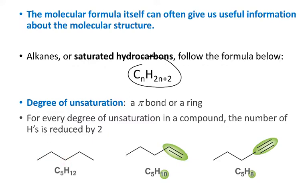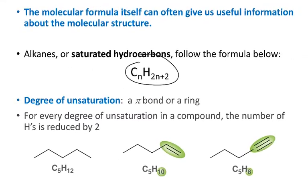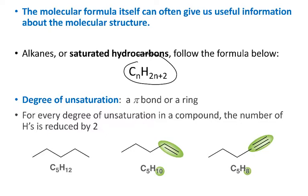So when we talk about degrees of unsaturation, we're talking about either pi bonds or a ring. If I have a double bond, that would be one degree of unsaturation, a ring would be one degree of unsaturation, or a triple bond would be two degrees of unsaturation. Every time I have either a pi bond or a ring, the number of hydrogen atoms is reduced by two.